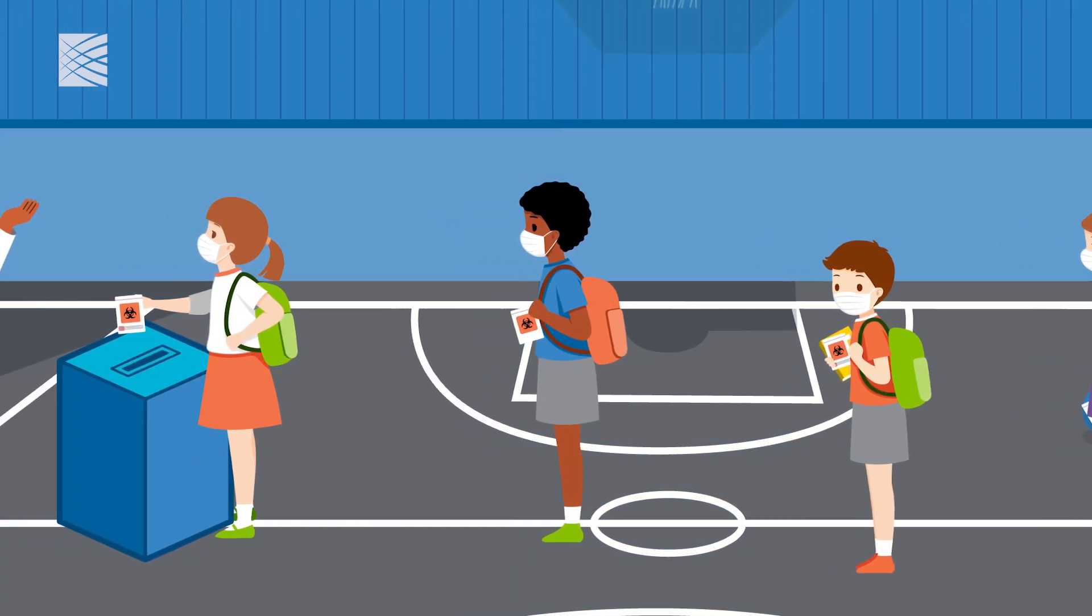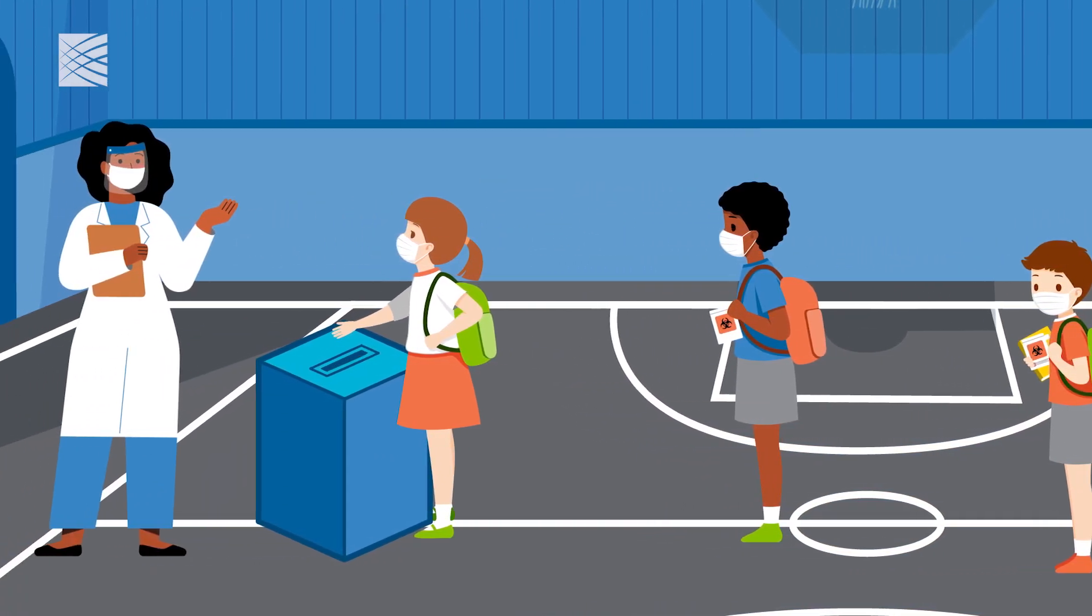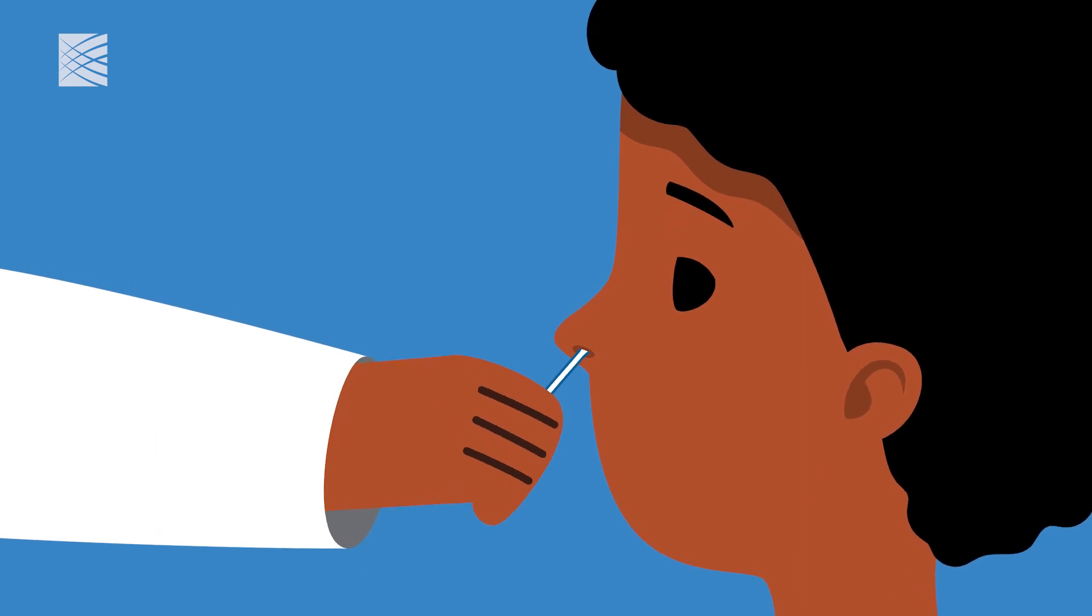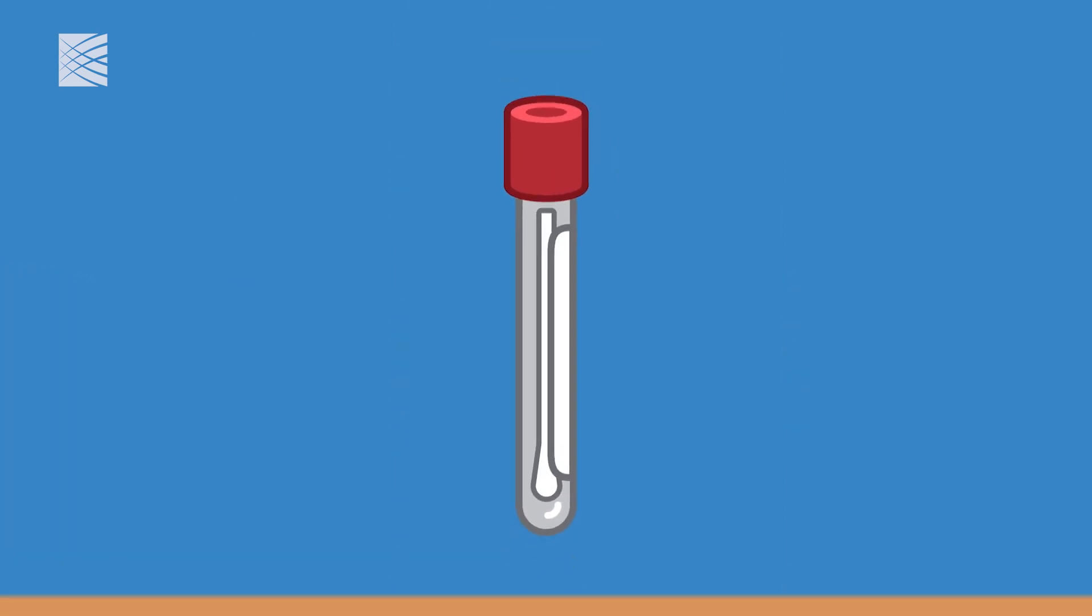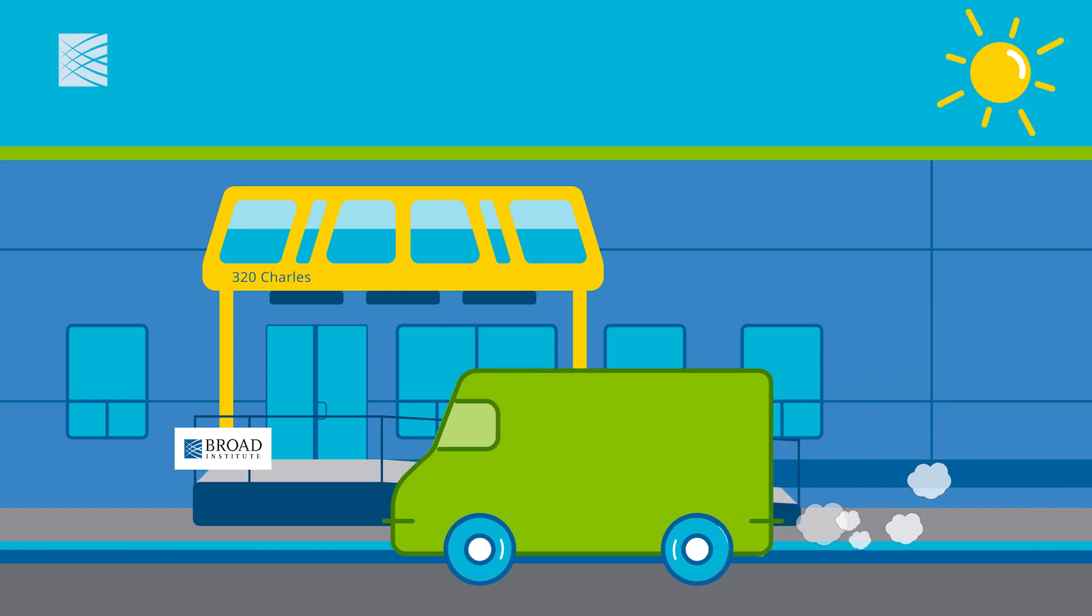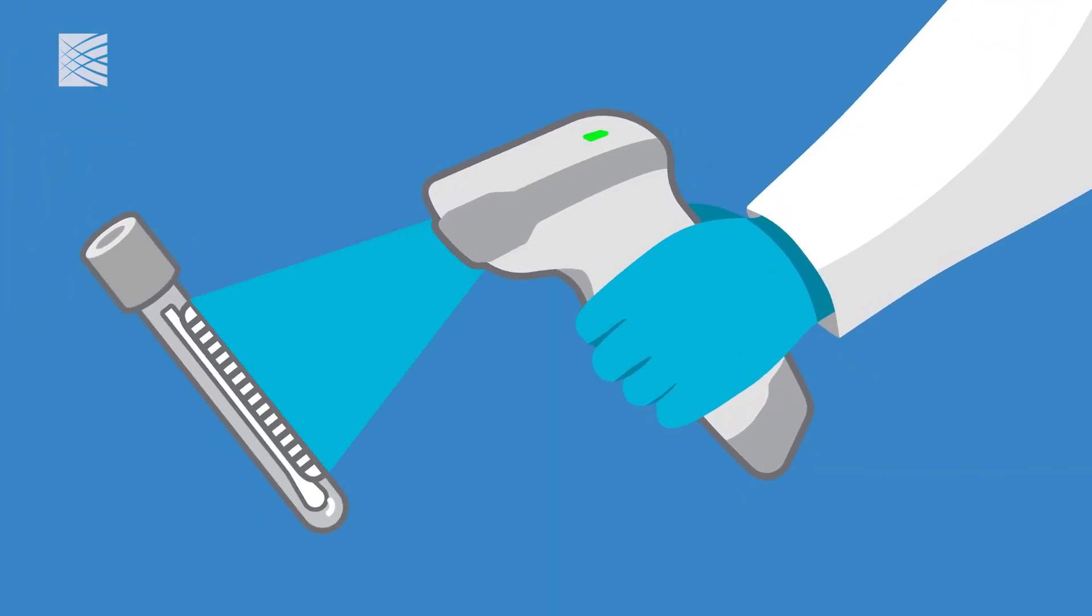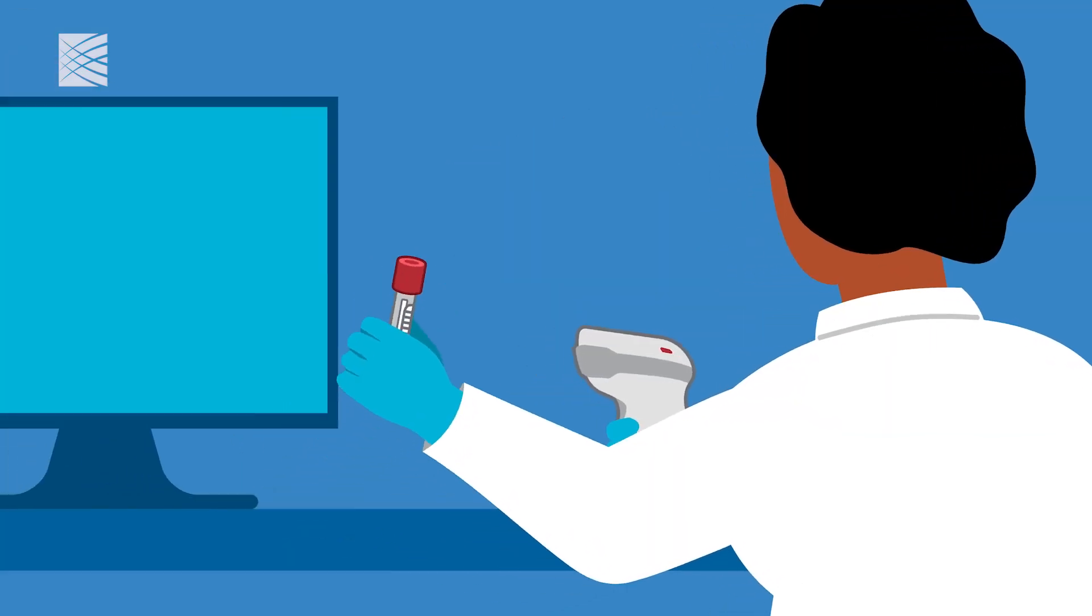Let's take a look at how a sample is processed from start to finish. Once a patient sample is collected, it is packaged and shipped to the Broad. When samples arrive, technicians scan the barcodes on the sample tubes and confirm patient information.